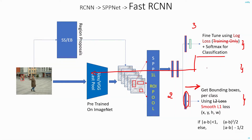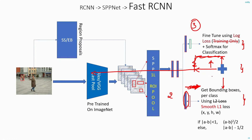In Fast RCNN, they found experimentally that when you add up both the classification loss and the bounding box regression loss and use the combined loss to back-propagate through the network, you get much higher levels of accuracy. One more advantage is that you no longer need to train the bounding box regressor separately. So you have reduced the training stages from three in RCNN to just one stage, and you are also getting higher levels of accuracy.